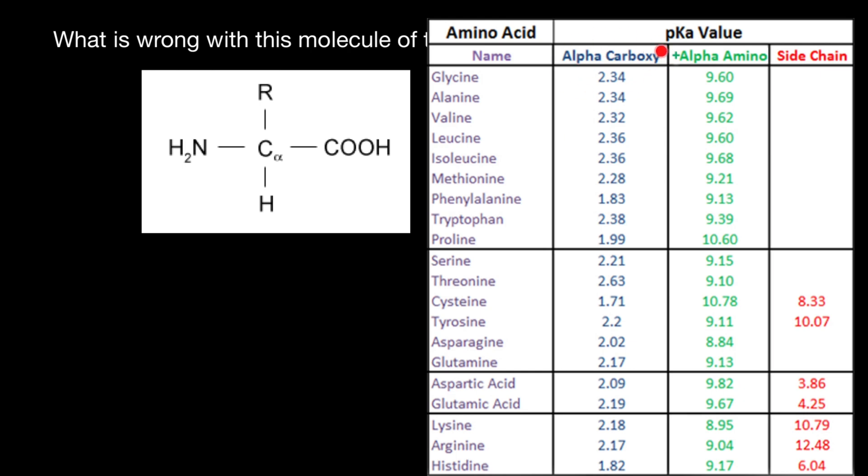For example, alpha carboxy, which is here, would retain hydrogen only if pH of the solution is below all these numbers. So you see these numbers fluctuate between 1.71 and 2.34.